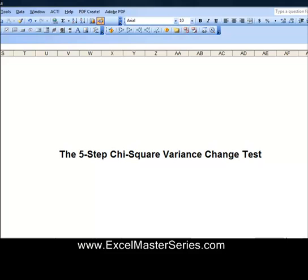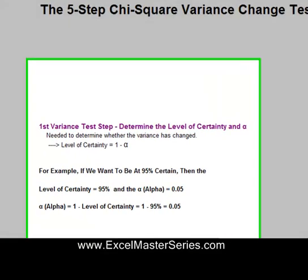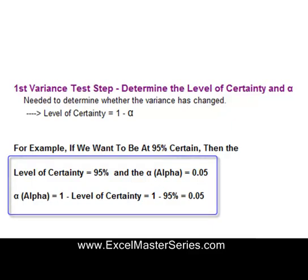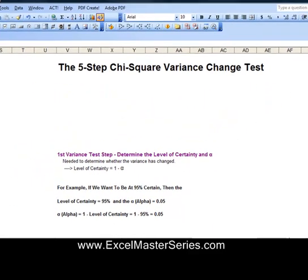Here's the five-step Chi-Square Variance Change Test. First step, you need to determine the level of certainty and alpha, and that's derived from the problem statement. If you want to be at least 95% certain, then your level of certainty is 95%, and the alpha — which is 1 minus the level of certainty — is 1 minus 95%, so alpha equals 0.05.